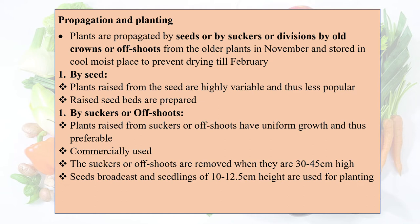Plants raised from seed are highly variable and thus less popular. Seeds are raised in seed beds. Suckers or offshoots, by contrast, have uniform growth and are mostly preferable to seeds, so they are commercially used.